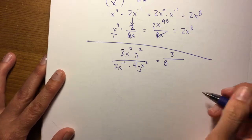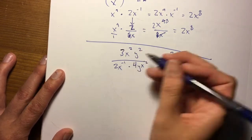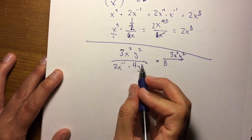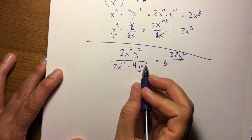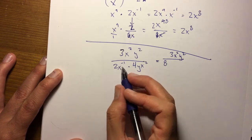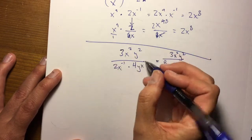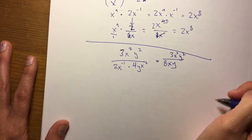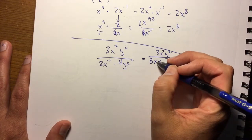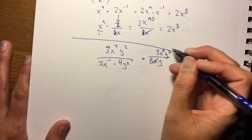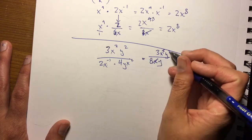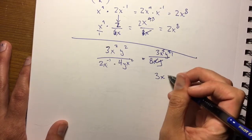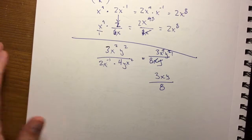Now, what do we do with our x's? On top we just have x squared and y squared. On the bottom we have x to the negative 1 and x to the 2. So x to the negative 1 times x squared is x to the 2 minus 1, or just x. Then I have a y. Since I have two x's on top and one on the bottom, I can cancel one of those. I have y and two y's up here — I can cancel one. So this becomes 3xy over 8.